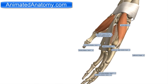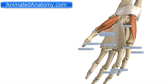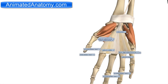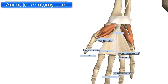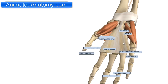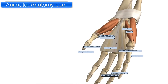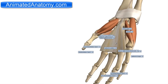The next muscle is the flexor digiti minimi brevis. The flexor digiti minimi has the origin on the hamate bone, shown here. The insertion is the little finger. It is also innervated by the deep branch of the ulnar nerve and it serves to flex the little finger. The opposing muscle is the extensor digiti minimi, which is explained in other lessons.